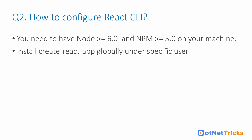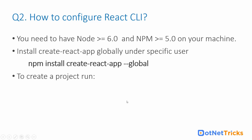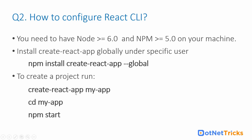We install React CLI globally so it is accessible on our entire machine — from anywhere we can create and build React.js applications. The command to run is: `npm install -g create-react-app`. Then you can create a React project by running `create-react-app my-app`, go inside the project with `cd my-app`, and run `npm start` to launch your React.js application.